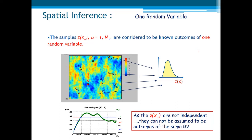Now let us see a probabilistic framework of the geostatistical estimator. Let us consider the samples z(x_α) as known outcomes of one random variable. But in previous lectures we could see that the sample values are not independent — we could see that by the variograms. Since the z(x_α) values are not independent, they cannot be assumed to be outcomes of the same random variable. So this framework cannot be adopted.